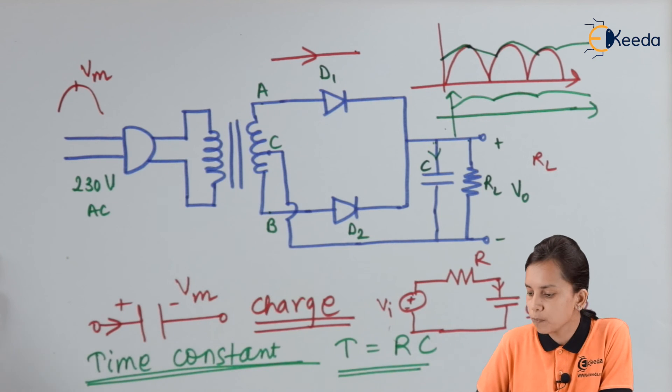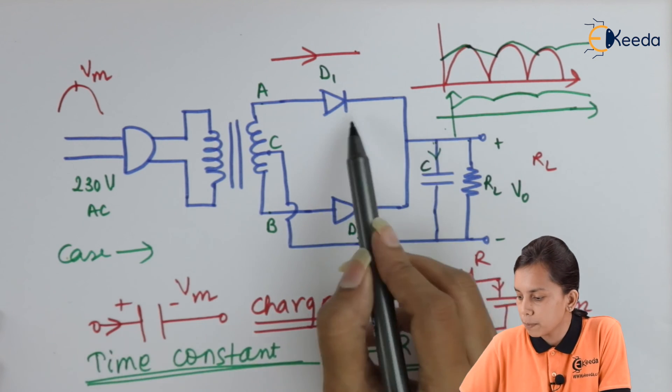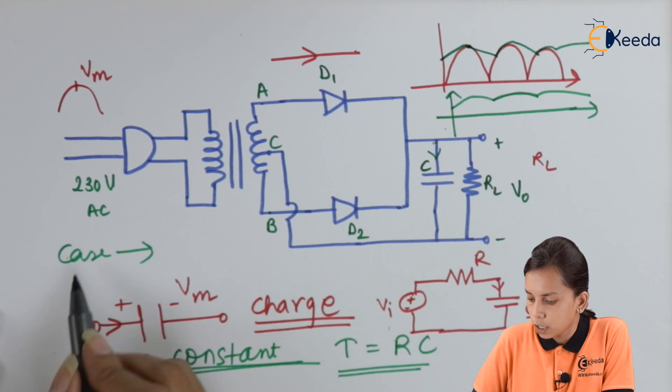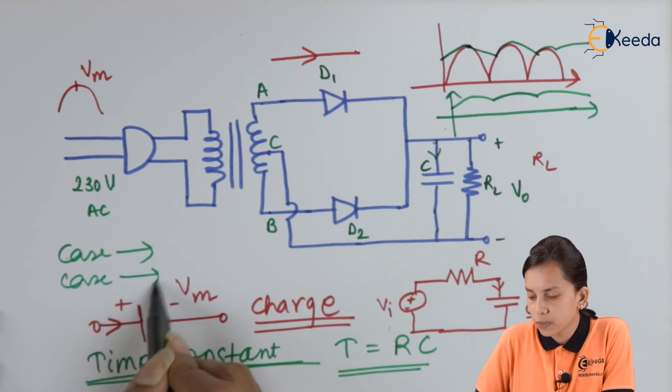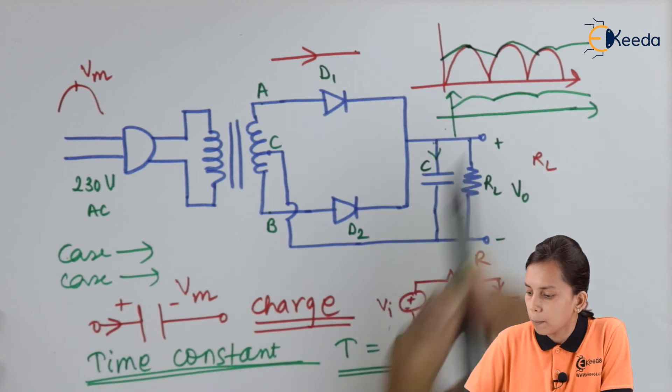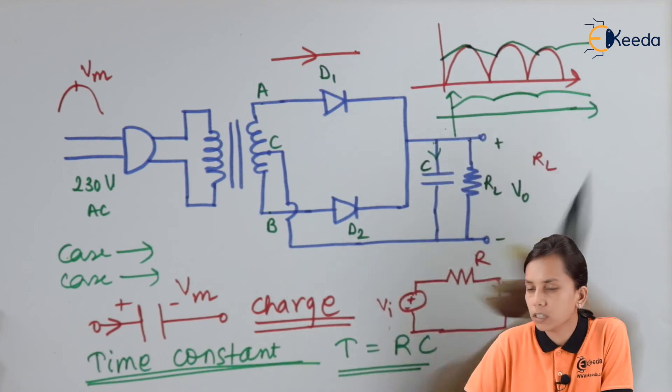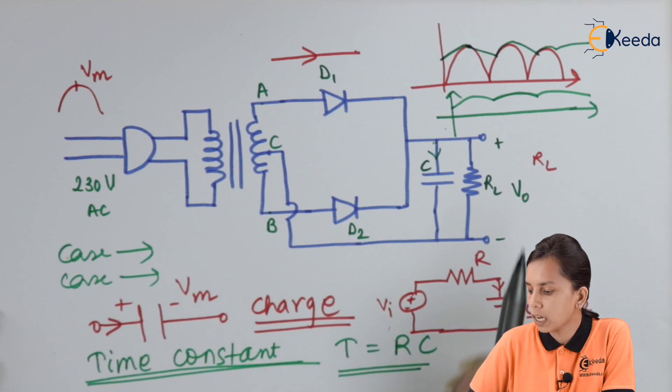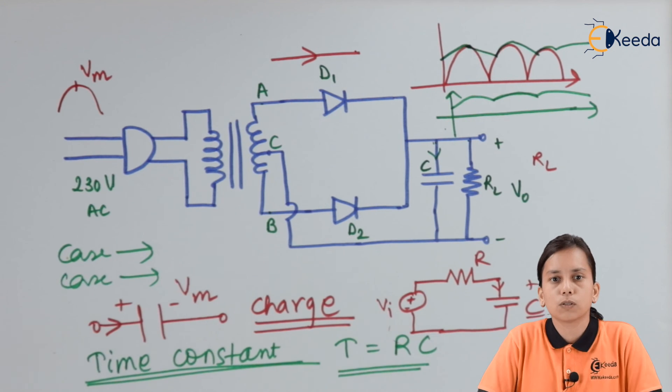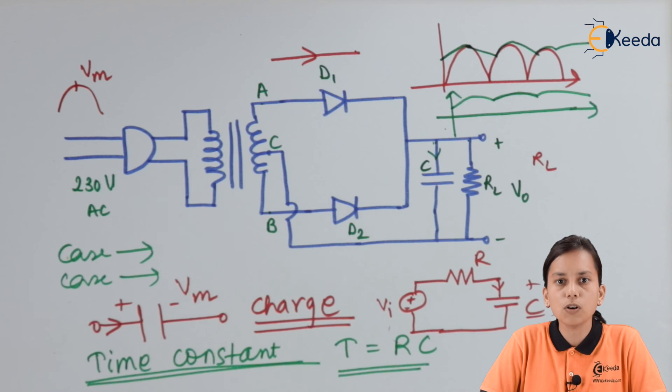So what are the points to remember for the capacitor filter is that during positive cycle, capacitor will charge. During negative cycle, capacitor will discharge. By getting charging and discharging, I am getting smooth DC and this is what our purpose was. Thank you for watching this video. Stay tuned with Ikeda and subscribe to Ikeda.